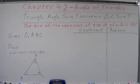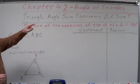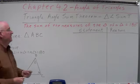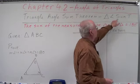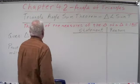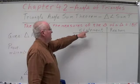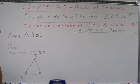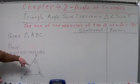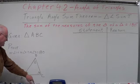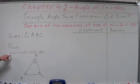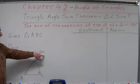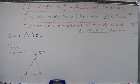The first thing we need to know is something you already know, but we're going to prove it. It's called the Triangle Angle Sum Theorem. The symbols for it are sum T, and it states that the sum of the measures of the angles of a triangle equals 180 degrees. We're given triangle ABC, and we want to prove that the measure of angle 1 plus the measure of angle 2 plus the measure of angle 3 equals 180 degrees.